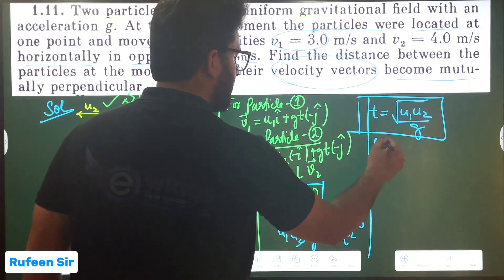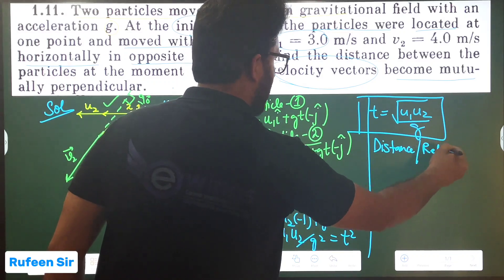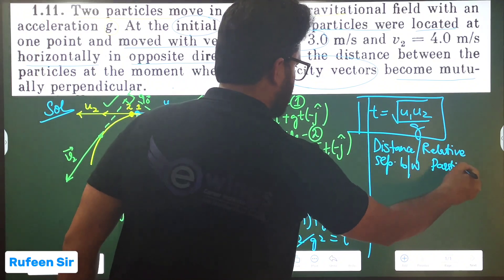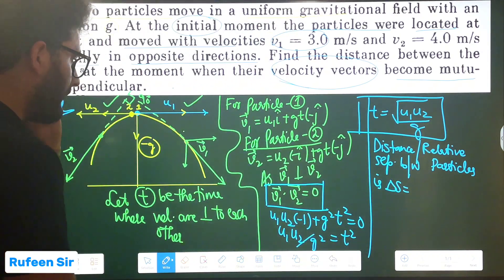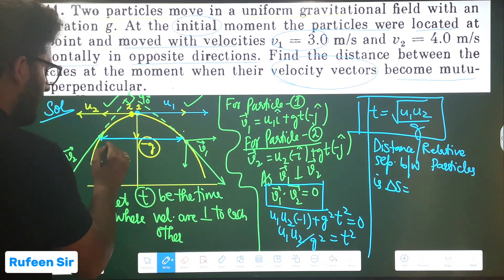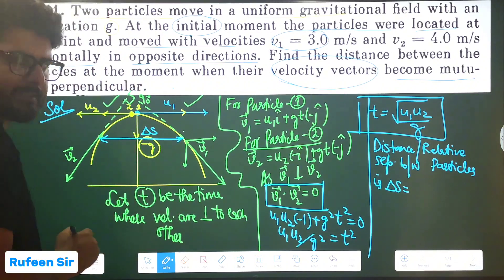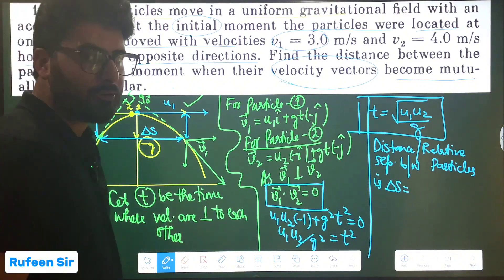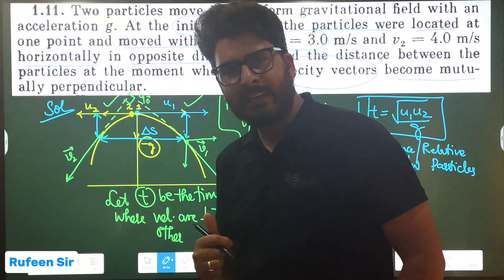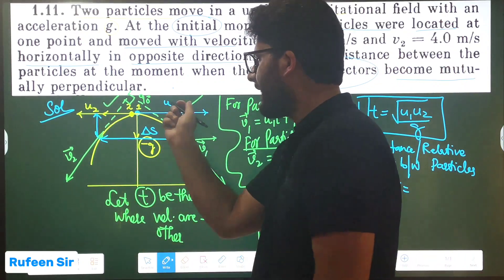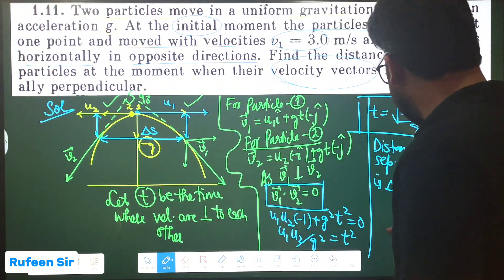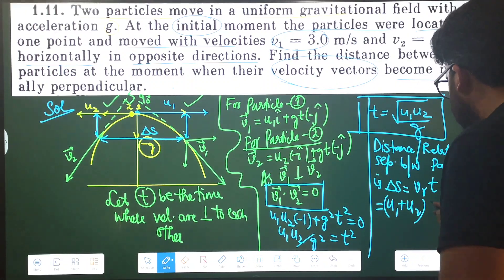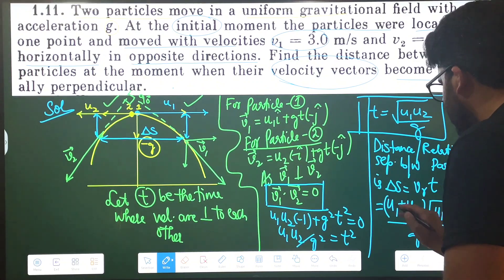The relative separation ΔS between the two particles: their vertical height is the same because in the vertical direction both are in free fall — I am projecting them horizontally, so vertical motion is identical. The separation is purely horizontal. Since their velocities are opposite, the relative horizontal separation is (U1 + U2) × T = (U1 + U2) × √(U1·U2/g).